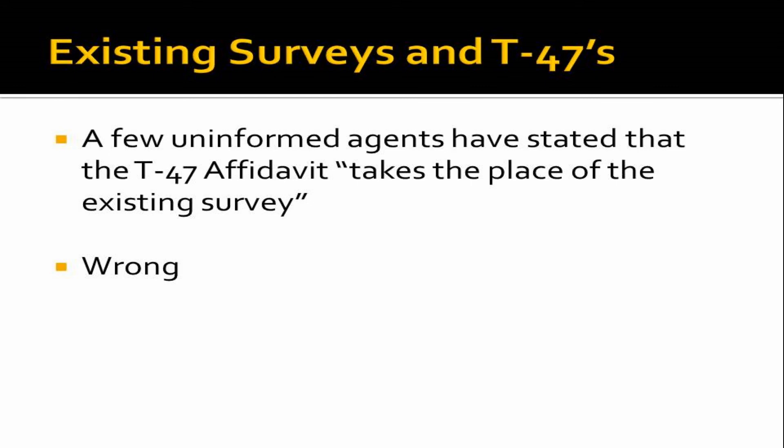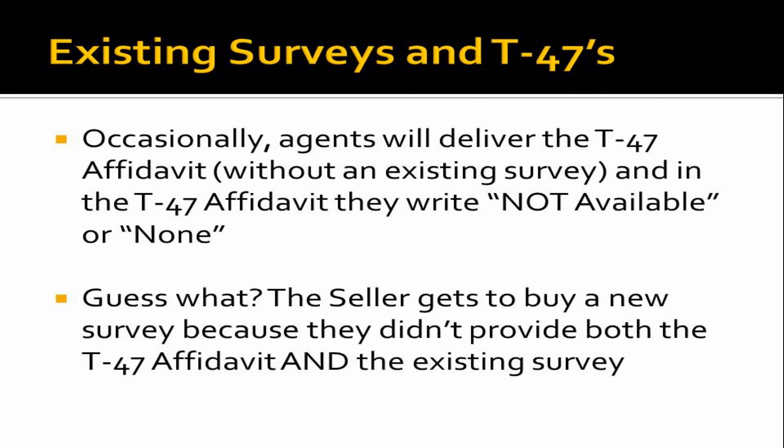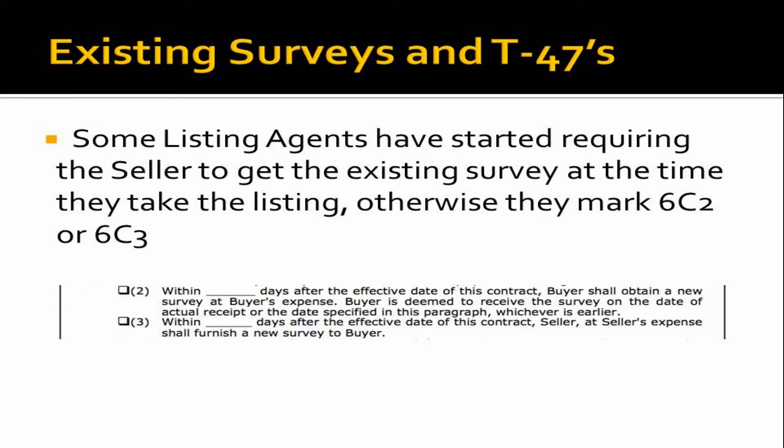Some agents claim there's a new thing where you can use a T-47 affidavit instead of a survey — that's just wrong. You have to have both a survey and a T-47. If a seller sends an affidavit saying the survey is not available or there is none, they've only delivered the T-47 affidavit and the seller gets to buy a new survey. Some agents have started requiring a copy of the existing survey when they take the listing; otherwise they automatically mark 6C2 or even 6C3 so they know with certainty who's going to pay for the survey.